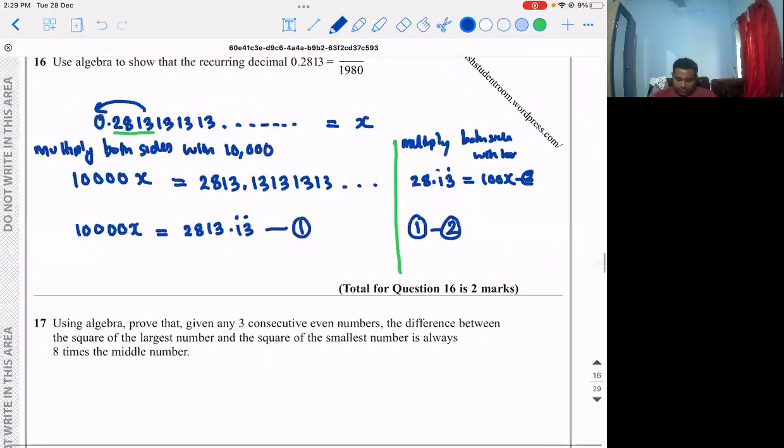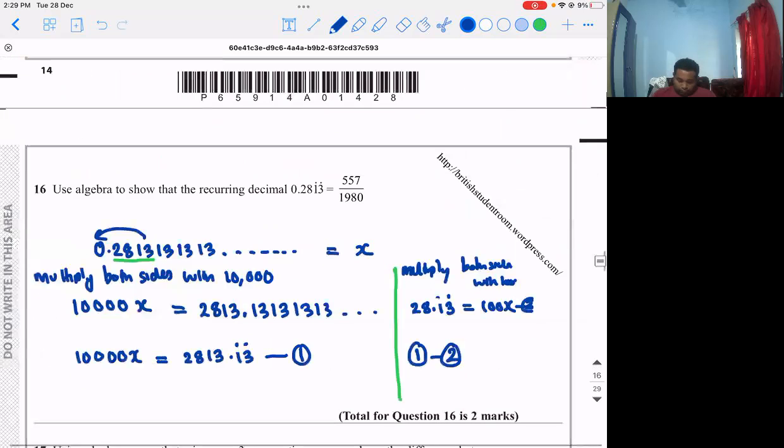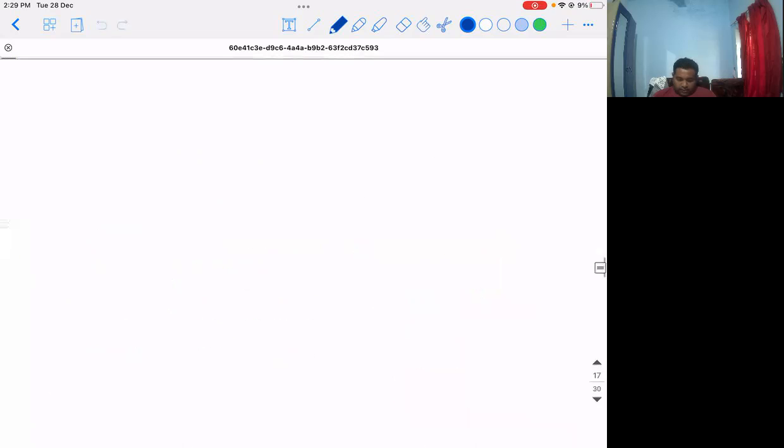I will write here. I'll add a page. The first equation is 10,000x equals 2813.13. The second equation is 100x equals 28.13.